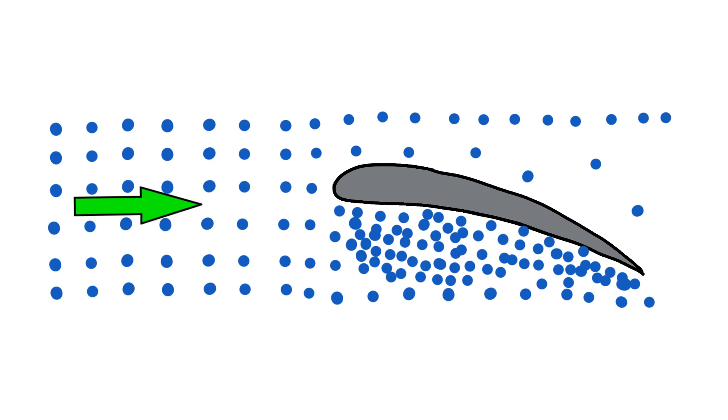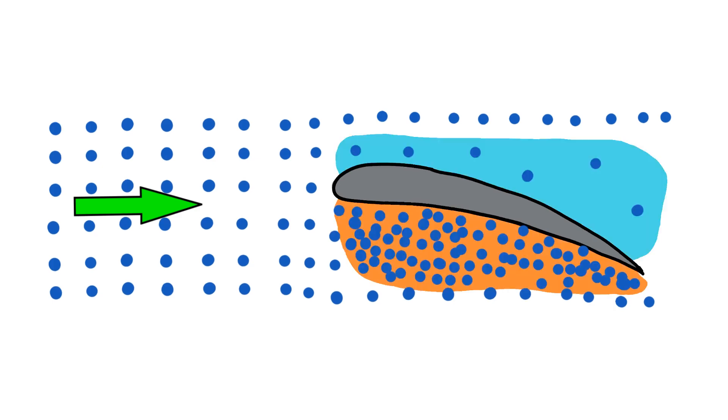Or, put another way, a zone of high pressure develops under the wing, and a zone of low pressure develops on top of the wing, creating lift.